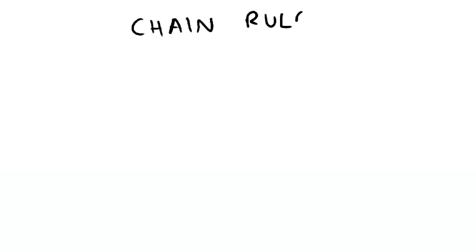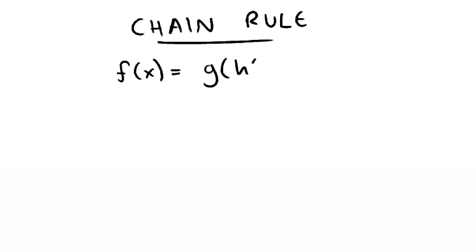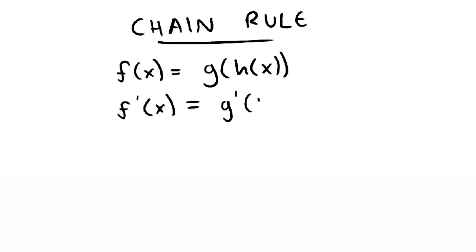The chain rule. The chain rule is used for nested functions. If f of x is equal to g of h of x, then the derivative of the function of x is equal to g prime of h of x multiplied by the derivative of the inside function, h prime of x.